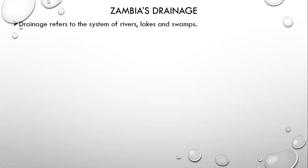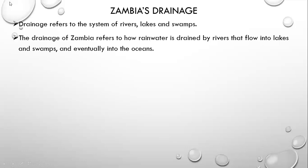Drainage refers to the system of rivers, lakes and swamps. When we say Zambia's drainage, it refers to how rainwater is drained by rivers that flow into lakes and swamps and eventually into the oceans.